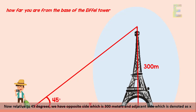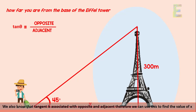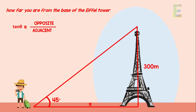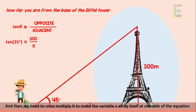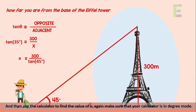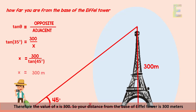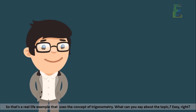Relative to 45 degrees, the opposite side is 300 meters and the adjacent side is x. Since tangent is associated with opposite and adjacent, we use that formula. The equation becomes: tan 45° = 300 / x. Cross-multiplying to isolate x, and using the calculator in degree mode, the value of x is 300 meters. So your distance from the base of the Eiffel Tower is 300 meters.